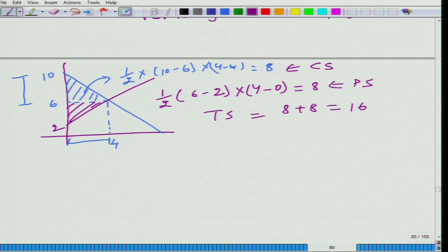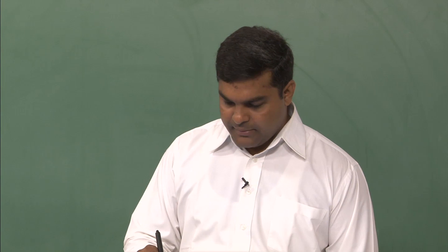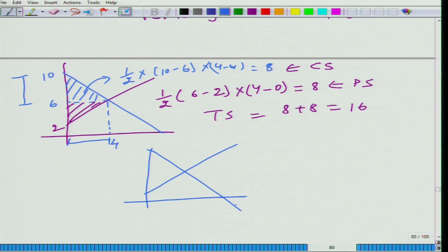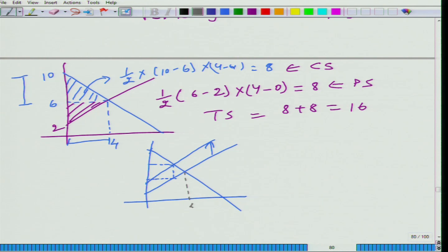Now let us see what happens when a tax of 2 units is imposed on the seller — you can also do it for when it is imposed on the buyer. If it is imposed on the seller, then the supply curve shifts upward. This is the shift. In this case, this is 4 and this was 6.